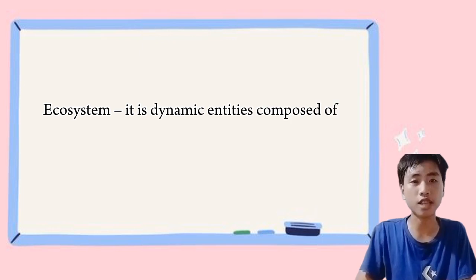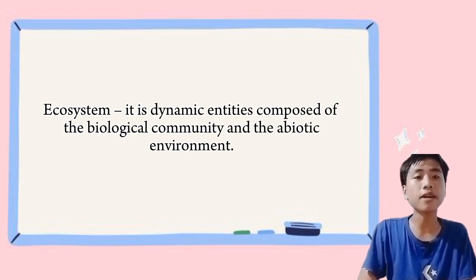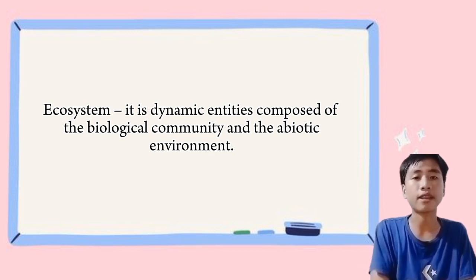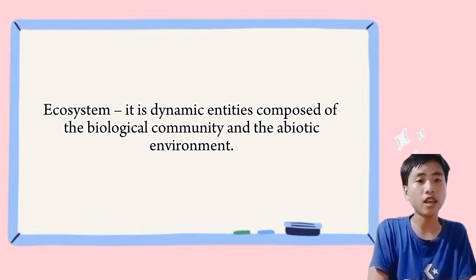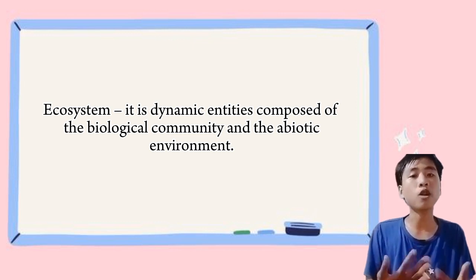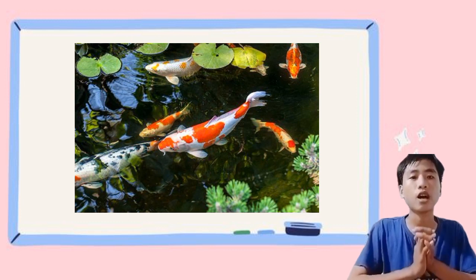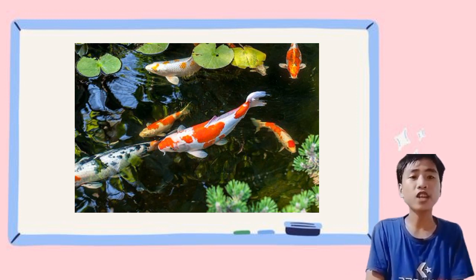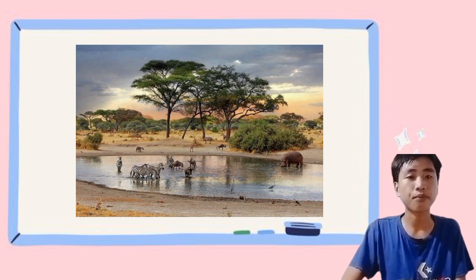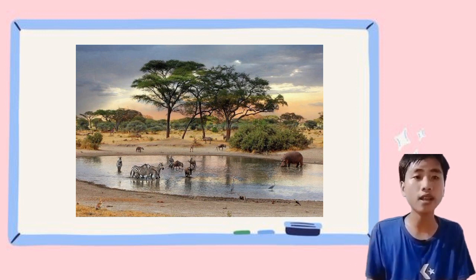Next is the ecosystem. An ecosystem is a dynamic entity composed of the biological community and the abiotic environment. This includes both the living and non-living things in an area. An ecosystem is made up of the community of living things and their environment, like the soil, water, and air. An example of an ecosystem could be a pond with its water, plants, fish, insects, and other living and non-living things. Another example could be a forest with its trees, animals, soil, and air.